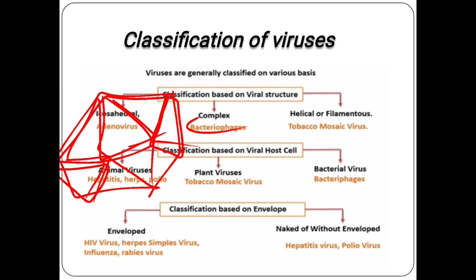Next is helical and filamentous structure. In helical viruses, the nucleic acid inside a hollow cylindrical capsid is helical in structure. Based on host type, viruses are classified into three types: animal viruses, plant viruses, and bacterial viruses.